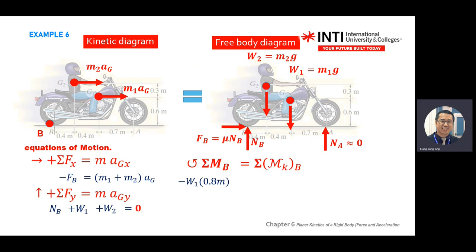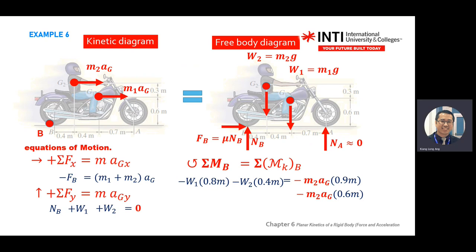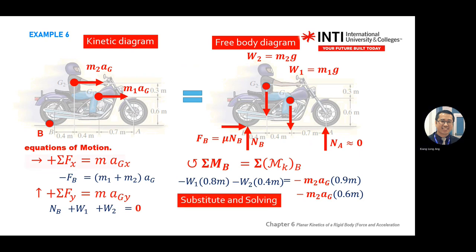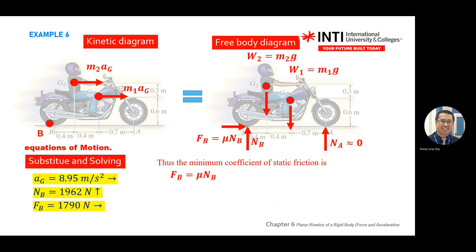On the left-hand side you have three moments. Some have no moment because their distance is zero. Then from the kinetic diagram you have two terms. Solve all these simultaneous equations to get the missing parameters. Once you find F_B and N_B, the missing part is the friction coefficient.